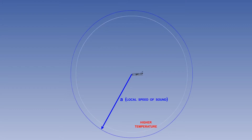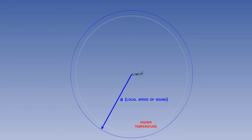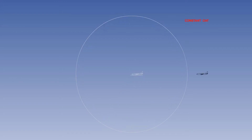In the same time interval, but with a higher temperature, the pressure wave would have propagated further — but not so far at a lower temperature. At a constant outside air temperature, do you think the pressure wave will look the same if the aircraft is moving when the pressure wave is generated?